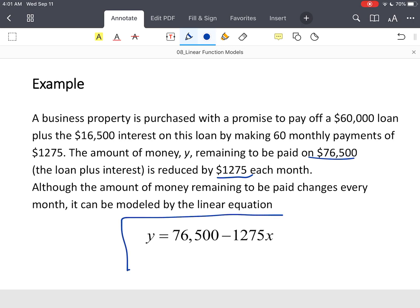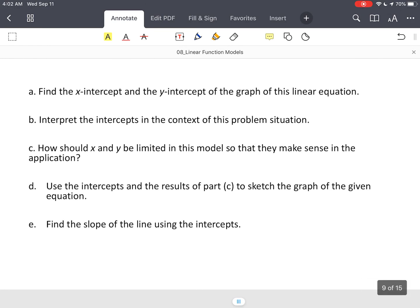Now your equation is Y equals $76,500 minus the $1,275 payment times so many months. So now we're going to take that real-life situation, and we're going to model it and answer some key questions. Let's walk our way through this.